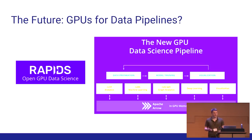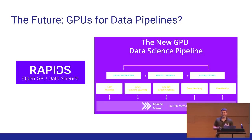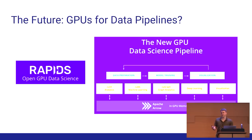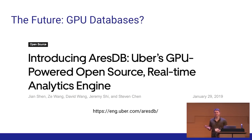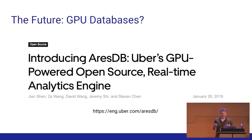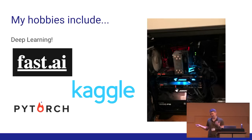I also keep my ear to the ground on what's happening in the industry. This is Rapids AI, partnered with NVIDIA. Their concept is that GPUs might be used for the entire data processing workflow — not just model training, but also pre-processing and even visualization. There may even be GPU databases; Uber built a GPU-powered database for analytics this year. So GPUs are starting to enter data processing workflows.